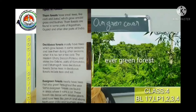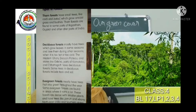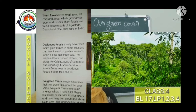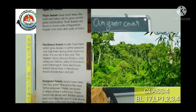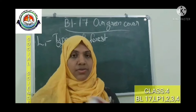Evergreen forests mostly have trees that stay green throughout the year. Some evergreen forests are found in areas where it rains a lot. These forests are dense with smaller plants and have trees like Jamun and Ebony. Northeast India and southern states such as Kerala, Andhra Pradesh, and parts of Karnataka have evergreen forests.